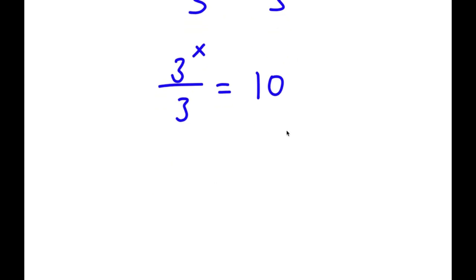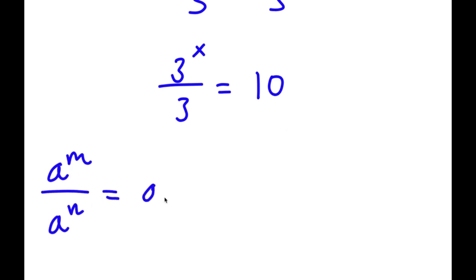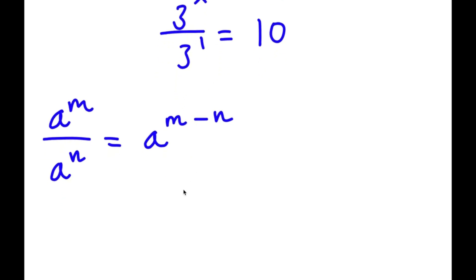Now, if you have something in the form a to the power of m over a to the power of n, this is equal to a to the power of m minus n. So 3 to the power of x over 3 — well, 3 is the same thing as 3 to the power of 1. So I have 3 to the power of x over 3 to the power of 1, which simplifies to 3 to the power of x minus 1 is equal to 10.